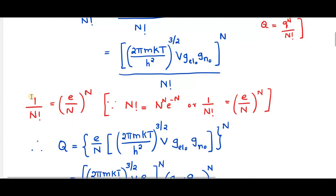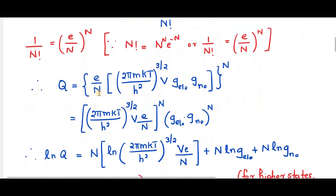Now we apply a simplification: 1/N! can also be written as (e/N)^N, since by Stirling's approximation N! = N^N × e^(−N), so 1/N! = (e/N)^N. So instead of 1/N!, we write (e/N)^N. Therefore, the molar partition function capital Q is equal to [(e/N) × (2πmKT / h²)^(3/2) × V × G_EL × G_N]^N.